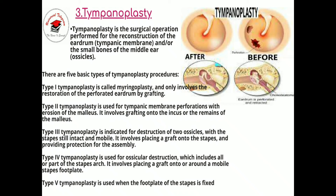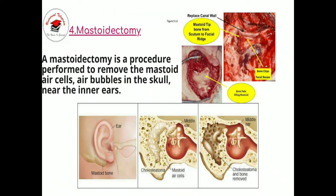The third type of tympanoplasty is indicated for destruction of two ossicles with the stapes still intact and mobile; it involves placing a graft onto the stapes and providing protection for the assembly. The fourth type is used for ossicular destruction which includes all or part of the stapes arch; it involves placing a graft onto or around a mobile stapes footplate. The fifth type is used when the footplate of the stapes is fixed.